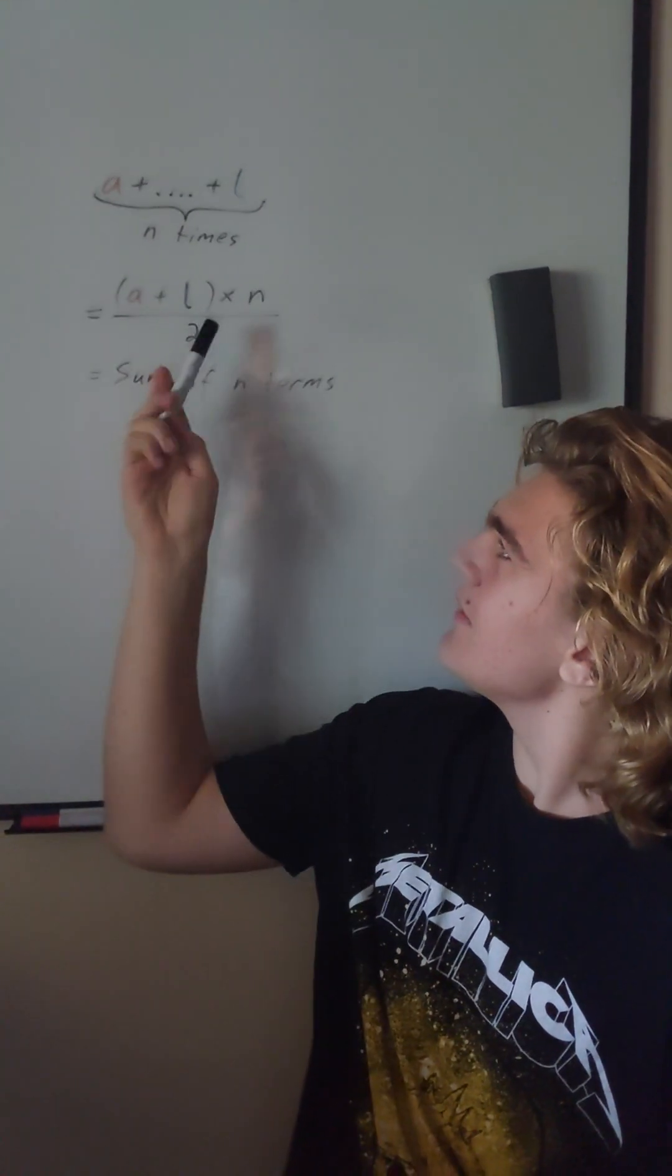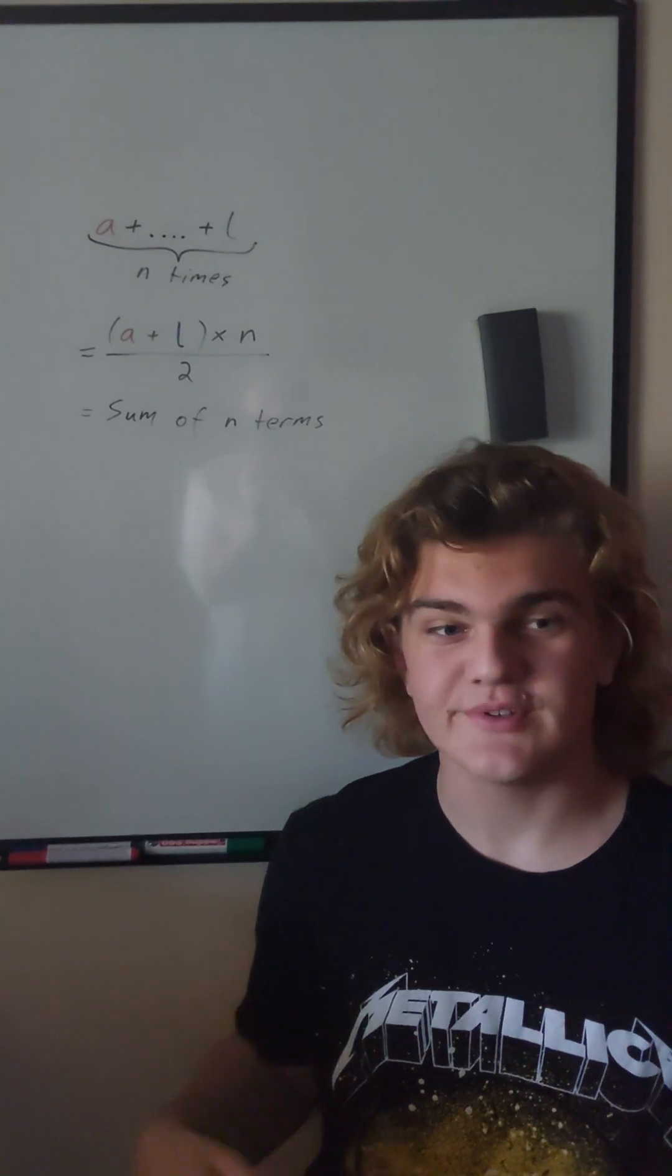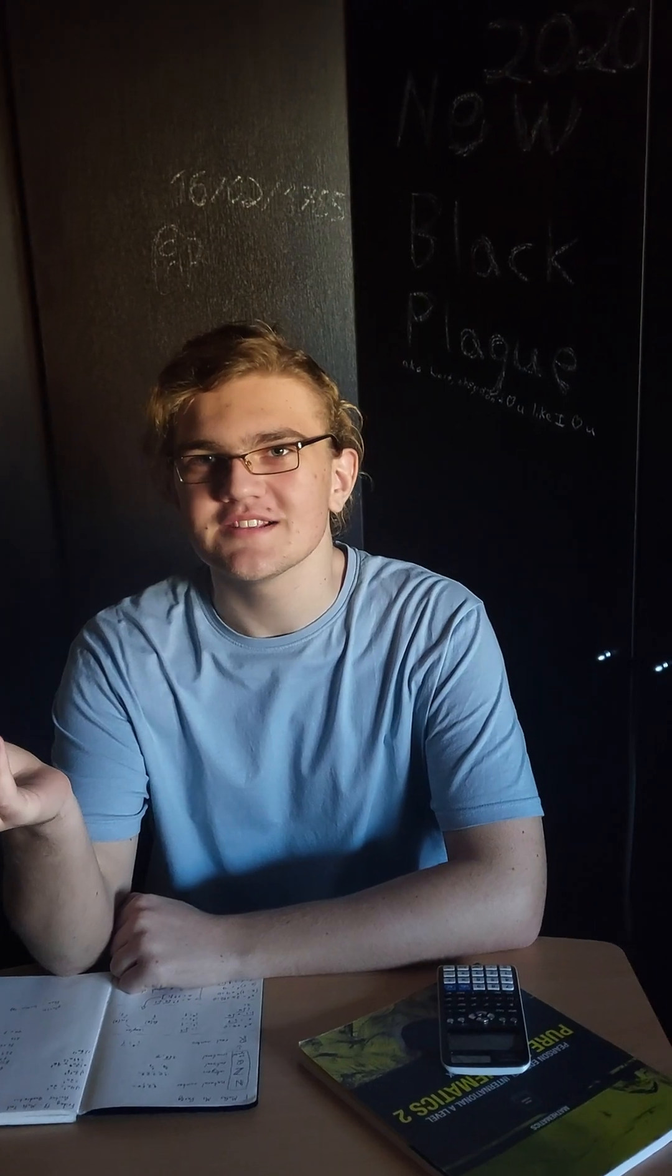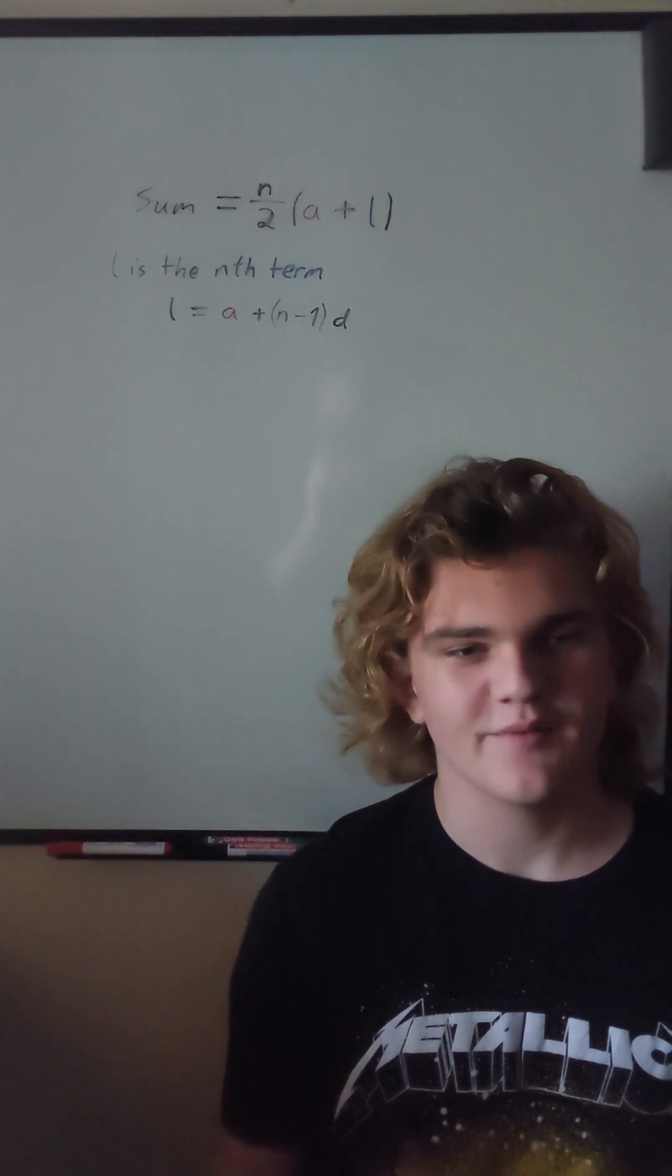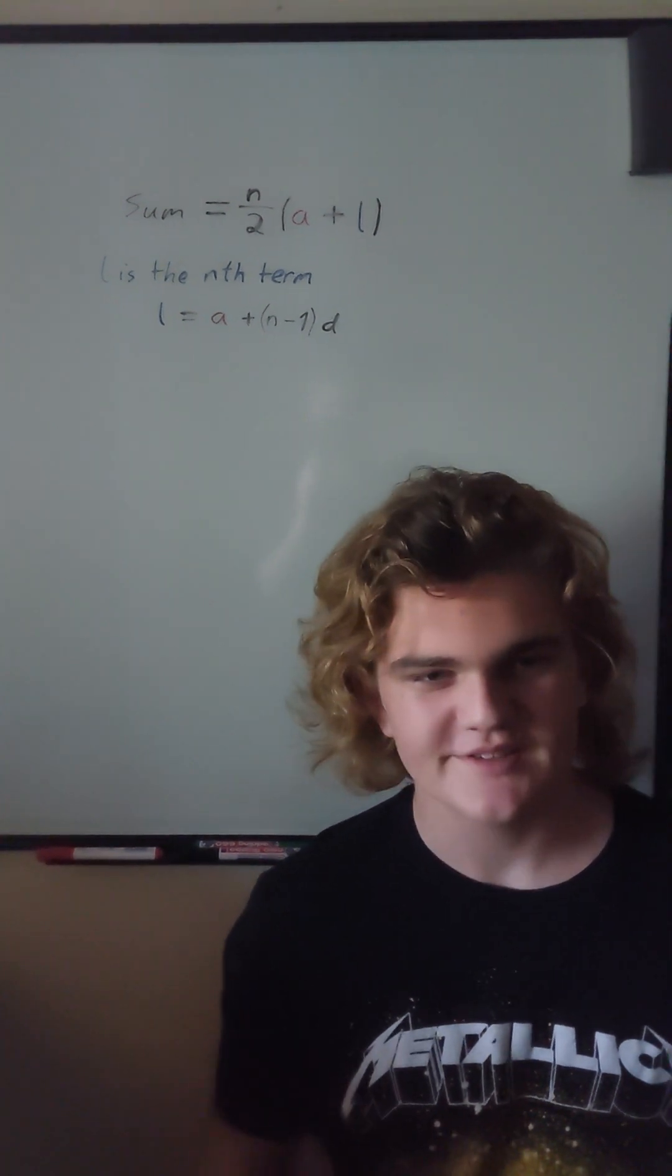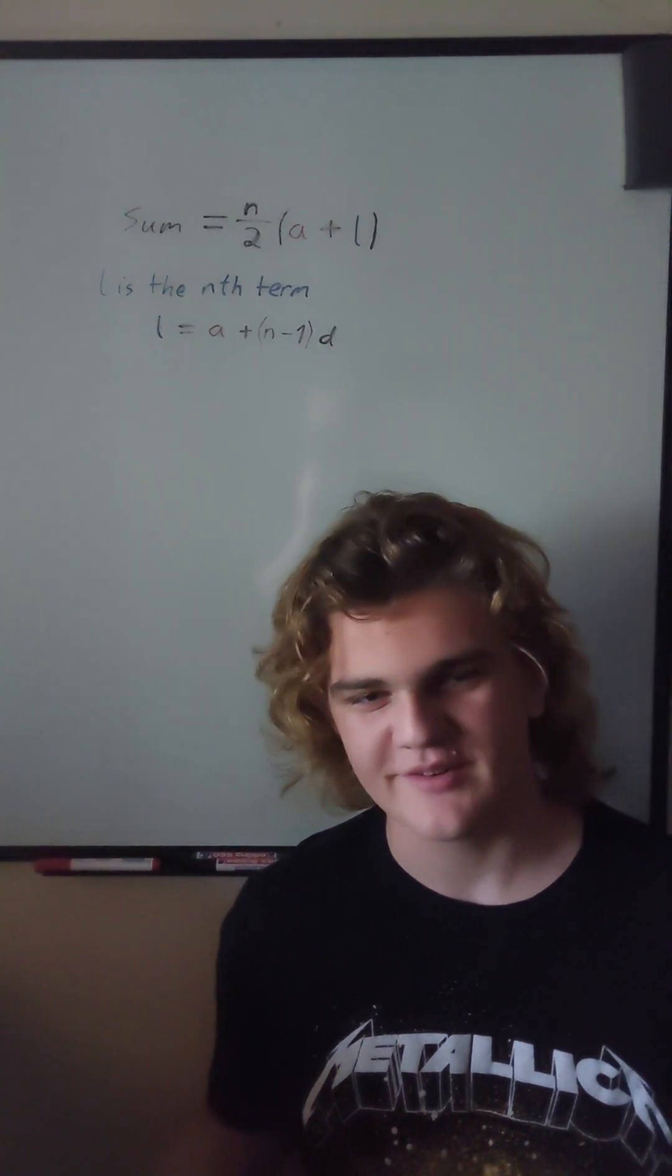And then multiply by the number of terms in the sequence and divide by 2 to get rid of the doubles. And let's rewrite this to make it neater. But don't we know what the last term will be? Yep, we already have a formula for the nth term, which is a plus n minus 1d, where d is the common difference or the amount that we're increasing by.